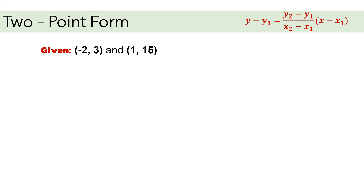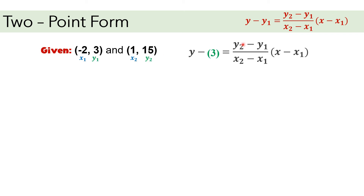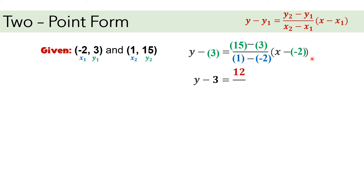Example number 3. Given the two points negative 2 and 3, and 1 and 15. We will use this two-point form. Assign x sub 1, y sub 1 to negative 2 and 3, and x sub 2, y sub 2 to 1 and 15. Let's substitute: y sub 1 is positive 3, y sub 2 is positive 15, y sub 1 again is positive 3, x sub 2 is positive 1, x sub 1 is negative 2, and another x sub 1 is also negative 2. Let's solve this fraction. Copy y minus 3. 15 minus 3 gives positive 12. And 1 minus negative 2 — since we have two negative signs, we cancel them and make it addition — gives positive 3.